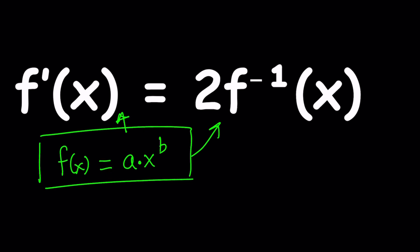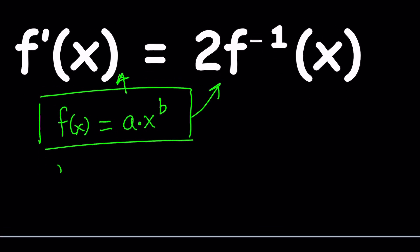Let's go ahead and start by differentiating this function. If you differentiate x to the b, you're going to have a b in the front, so it's going to be ab times x to the power b minus 1. That's the f prime.